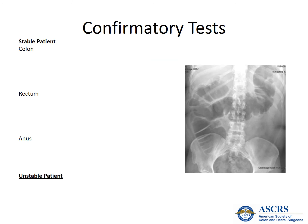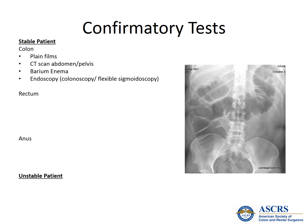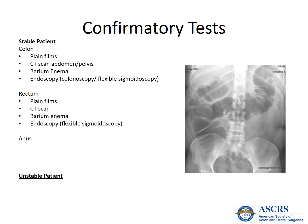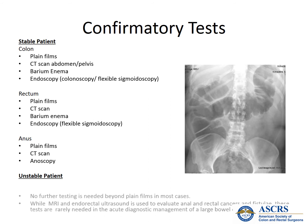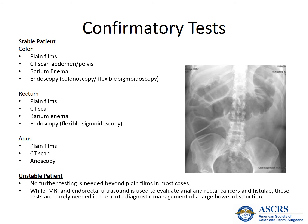Your treatment plan may be dependent on radiographic and endoscopic confirmatory tests, which can also be ordered in the emergency department. Abdominal plain films, specifically an abdominal series to include an upright chest and left lateral decubitus film, is a good initial test to order. In the stable patient, the colon and rectum can further be evaluated by CT scan, barium enema, and endoscopy. The anus can further be evaluated by CT scan and anoscopy. No further testing is needed in an unstable patient in most cases. MRI and endorectal ultrasound are rarely needed in the acute diagnostic management of a large bowel obstruction.